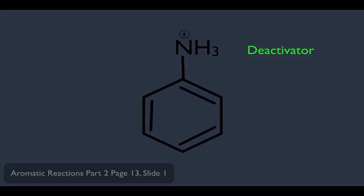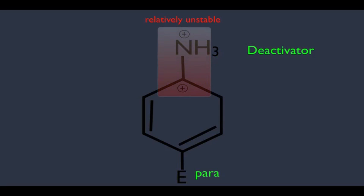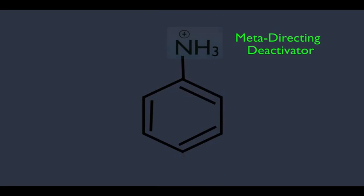Why is NH₃⁺ meta-directing? We know that adding an electrophile ortho or para to the original substituent produces a resonance structure with the positive charge on the carbon bearing the substituent. In this case, that's destabilizing because you have two positive charges right next to each other, which repel. This means adding an electrophile ortho or para to the NH₃⁺ substituent is not favored, so the electrophile prefers to add meta — making this substituent a meta-directing deactivator.